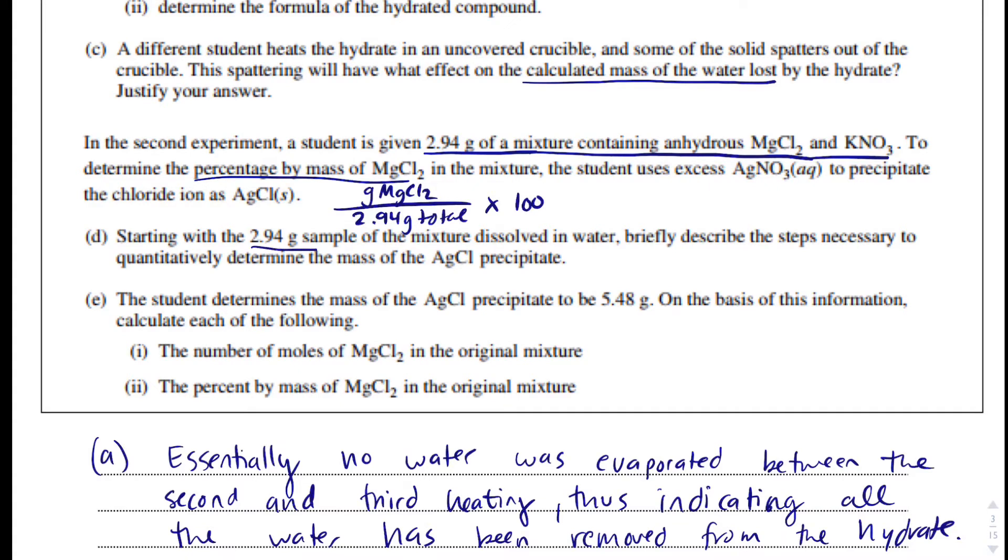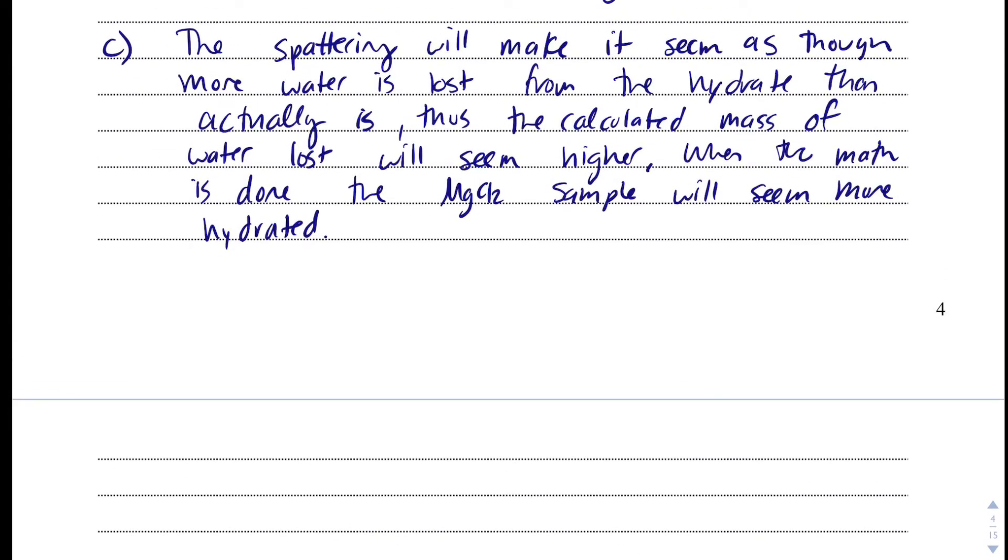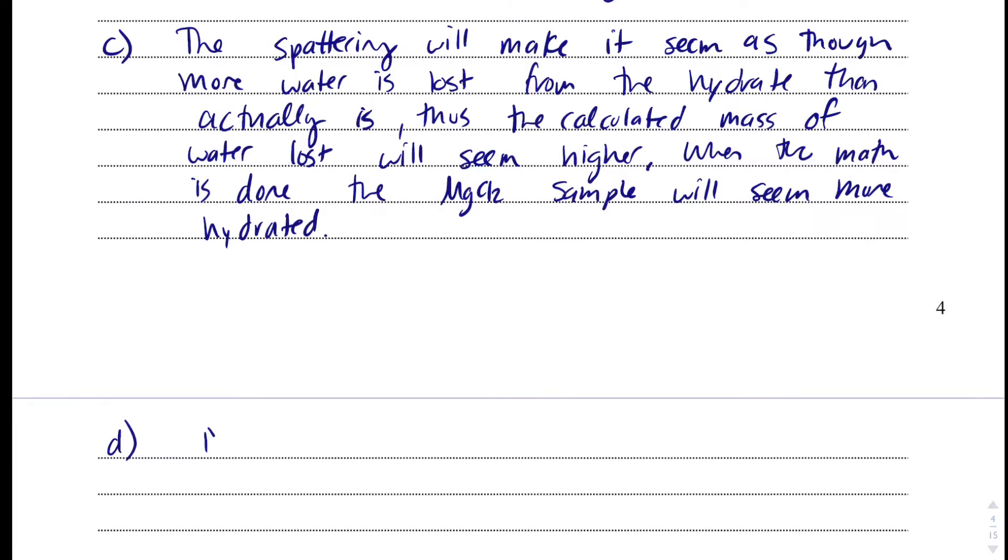Starting with the 2.94 gram sample of the mixture dissolved in water, briefly describe the steps necessary to quantitatively determine the mass of the silver chloride precipitate. What we need to do is, and I might be going overboard here just because I want to cover my bases, but one, we're going to add excess silver nitrate to ensure all of the MgCl2 reacts. That's the first thing. If we want all of it to precipitate as silver chloride, we need to make sure all of it reacts.